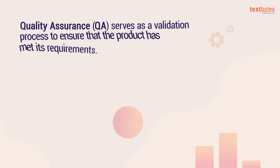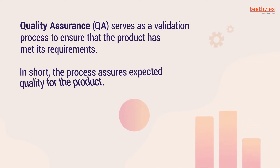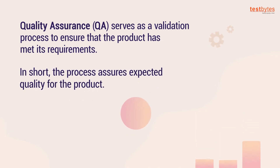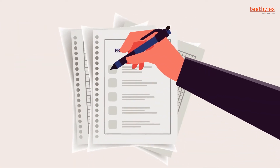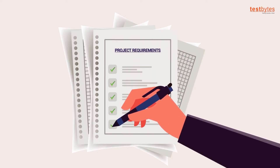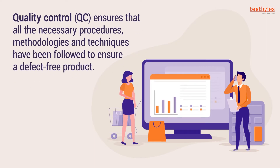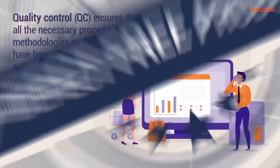Quality assurance, that is QA, serves as a validation process to ensure that the product has met its requirements. In short, the process assures expected quality for the product. Quality control, that is QC, ensures that all the necessary procedures, methodologies, and techniques have been followed to ensure a defect-free product.